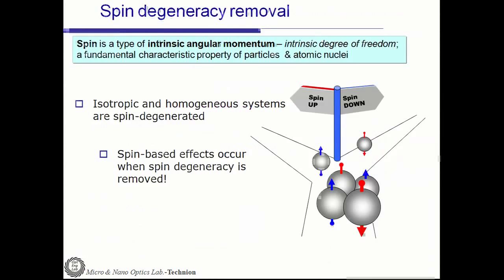We know that the spin is a type of intrinsic angular momentum of particles, an intrinsic degree of freedom. In general, isotropic and homogeneous systems are spin-degenerate. If we would like to manipulate a physical system by use of the spin as a degree of freedom, we must remove the spin degeneracy.